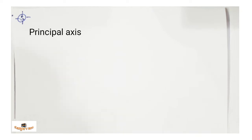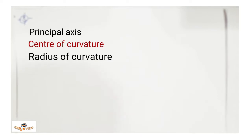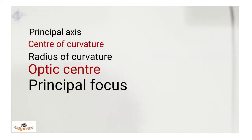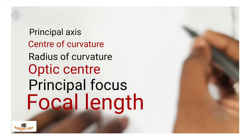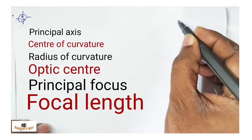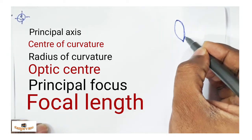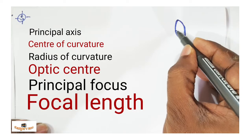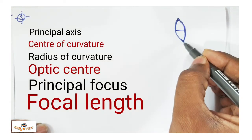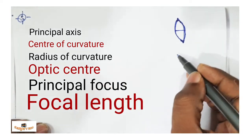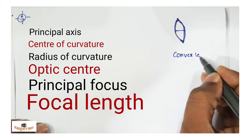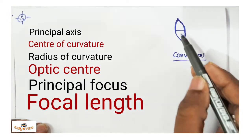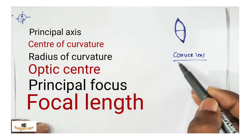Now I am going to take a lens and point out different parts on the lens, like principal axis, center of curvature, and radius of curvature — the same points we learned for mirrors. At the middle it is thick and at the edges it is thin, so this is a convex lens, also called a converging lens.